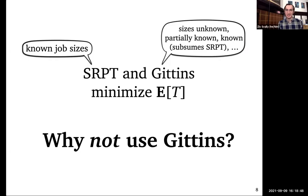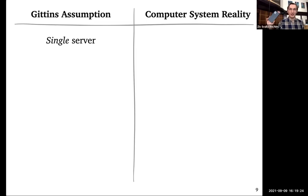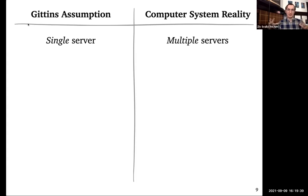So why don't we use Gittins or SRPT in computer systems? There are many assumptions in queuing theory that underlie Gittins' optimality that aren't necessarily true in computer systems. One assumption is that we're scheduling on a single server, but even phones now have several cores — modern computers are multi-server systems where each core is like a server from a queuing perspective.